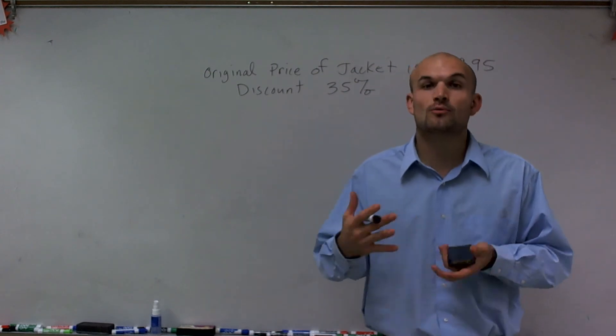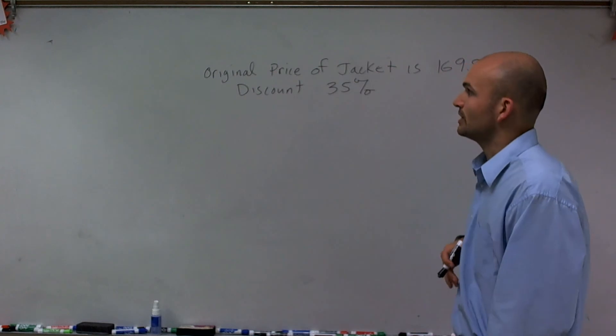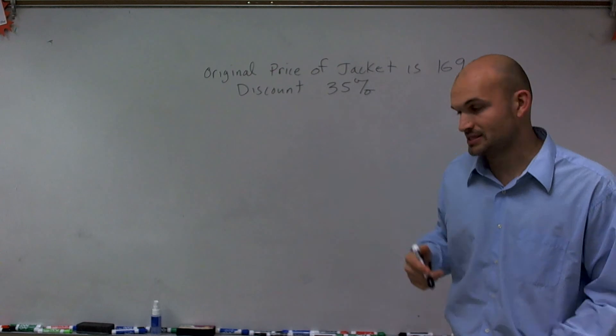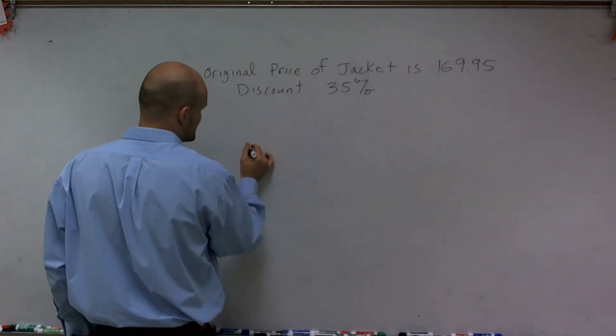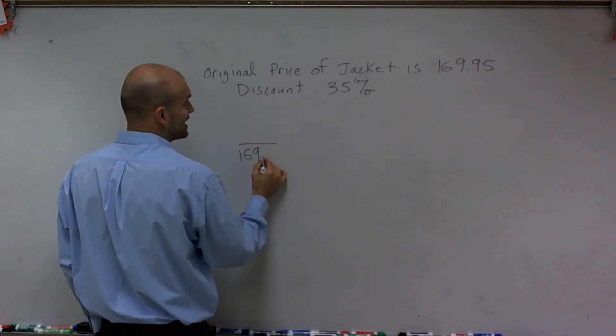Remember, proportions are ratios that are going to be set equal to each other. So the first ratio that I'm going to want to create is what is the original price of the jacket and the new price of the jacket. So we're going to set up a ratio and our original price of our jacket is $169.95.